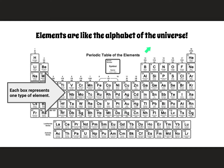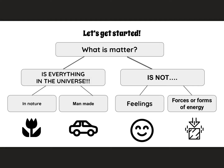This is the periodic table of elements. Each box represents one type of element. Elements are like the alphabet of the universe — just like our alphabet has 26 letters that make up all the words in our language, the periodic table contains a little over 100 known elements that scientists have discovered and organized. Everything in the universe is made up of one or a combination of these elements.